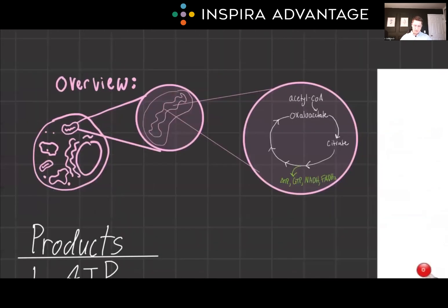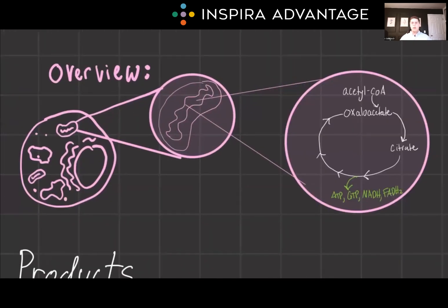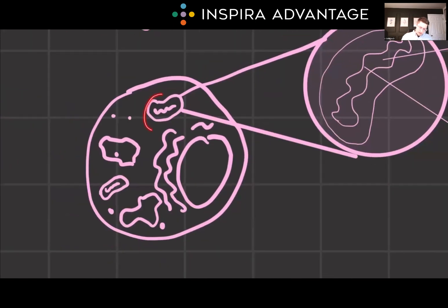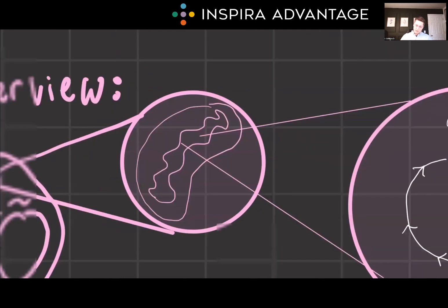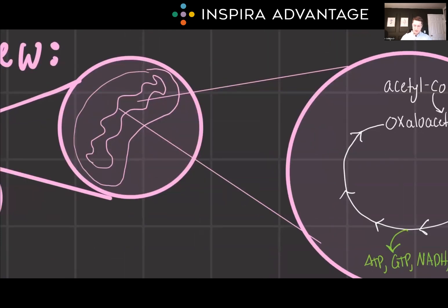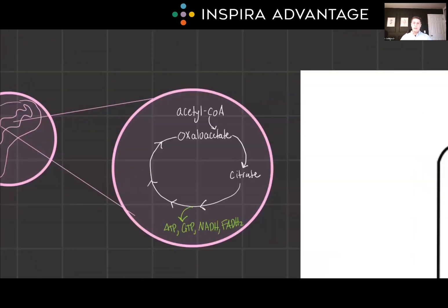Let's start with a bird's eye view of where the TCA cycle takes place. It's going to happen in the mitochondria inside a eukaryotic cell — specifically inside the matrix, the fluid-filled region in the middle.